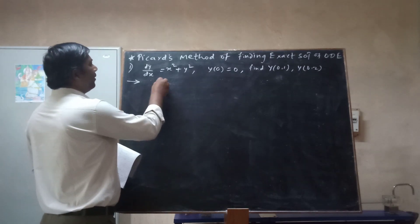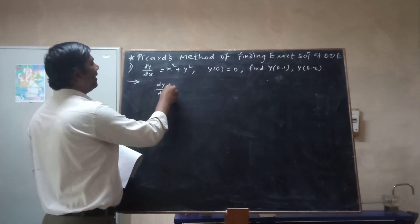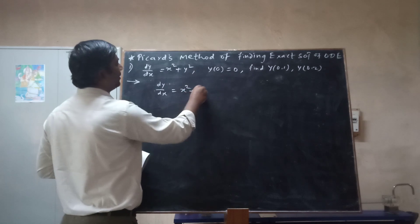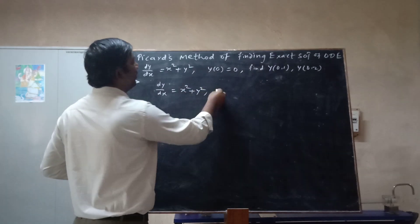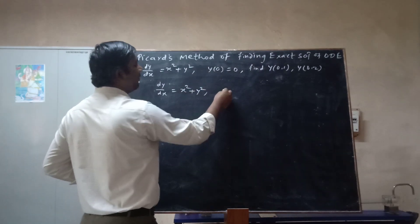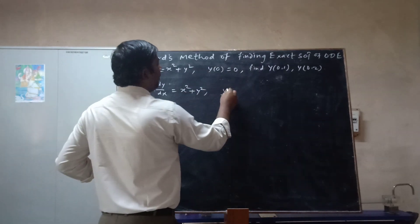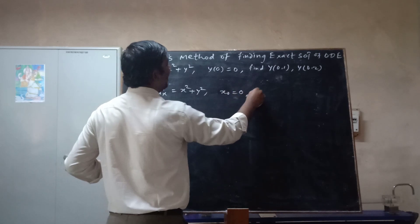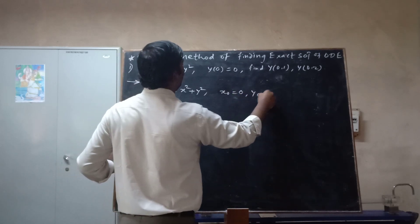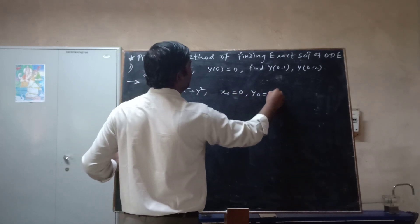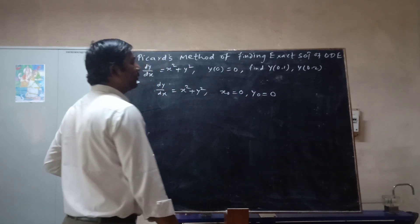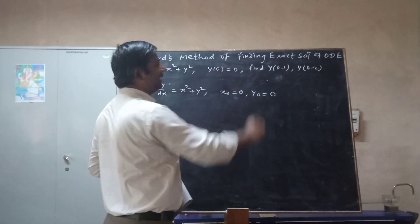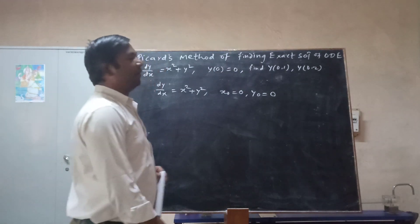The equation given is dy/dx = x squared plus y squared. The initial conditions given are x0 = 0 and y0 = 0, meaning at x = 0, y = 0.